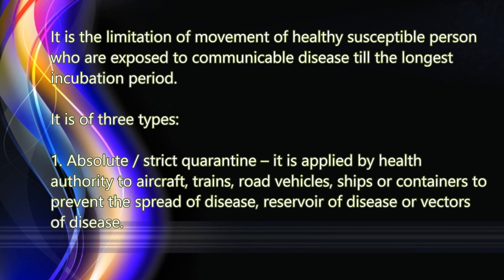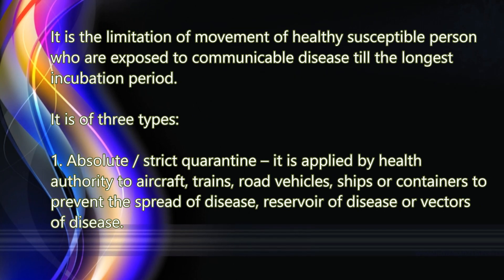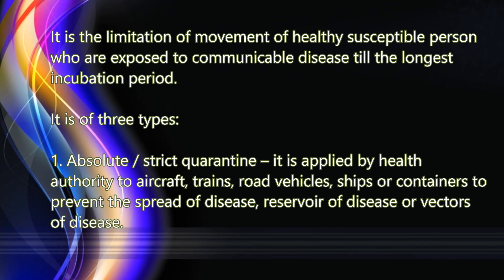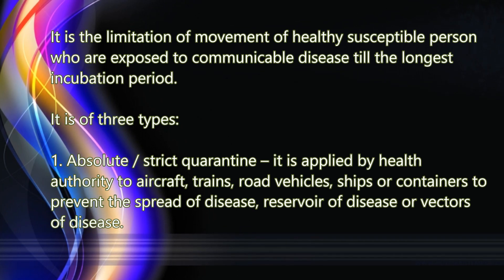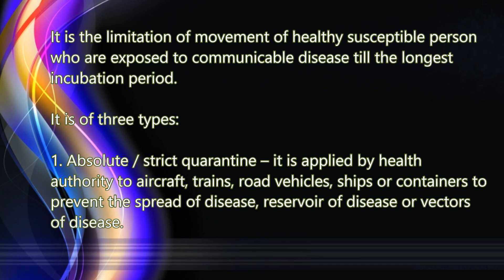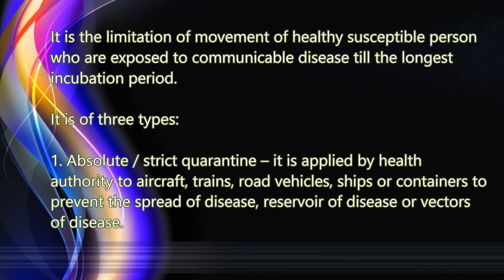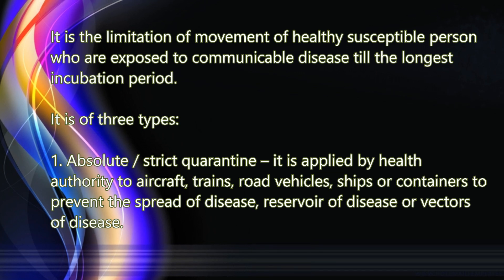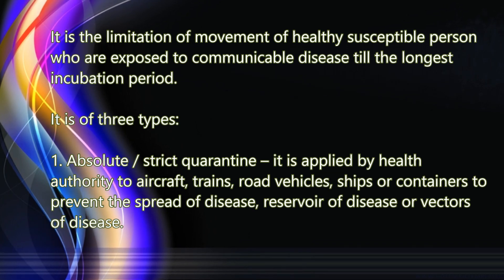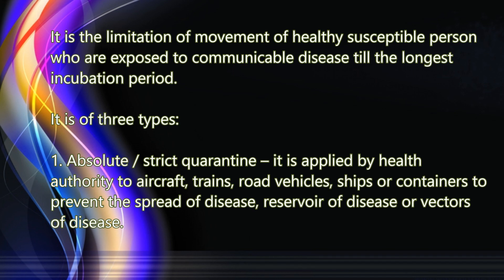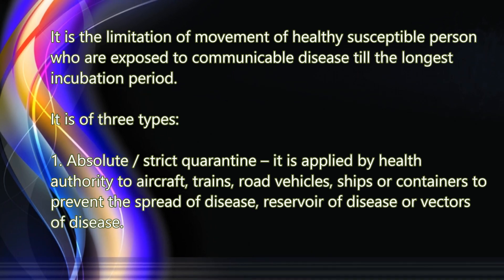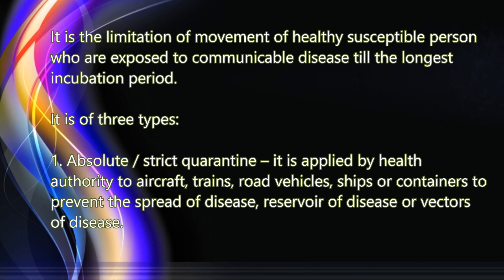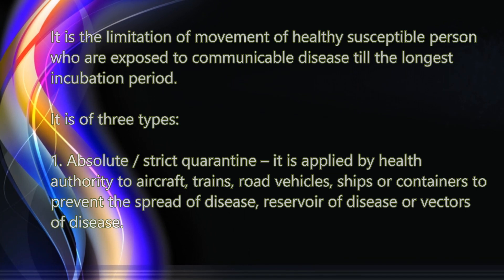Quarantine: The movement of healthy susceptible persons is limited who are exposed to a communicable disease till the longest incubation period. It is of three types. Type 1 — Absolute or strict quarantine: It is applied by health authorities to aircraft, trains, road vehicles, ships, or containers to prevent the spread of disease, reservoir of disease, or vectors of disease.